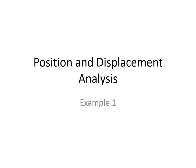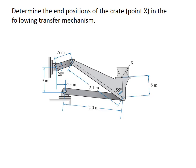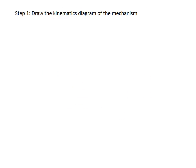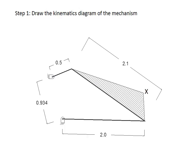In this example we show how to find the displacement of a mechanism. The mechanism shown here is a transfer mechanism being used to move a box from one point to another. This is a four-bar linkage, and the point of interest is where the box is located, shown as point X. The first step is to draw the kinematics diagram of the mechanism.